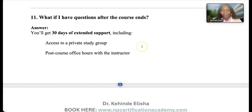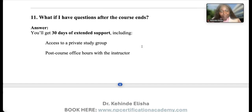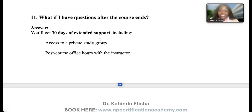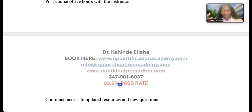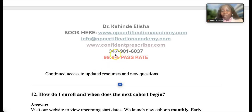What if I have questions after the course ends? That's not a problem. I'm available for you until you test, whether your course has ended or you're already out of the class. After you pass, we put you into our expert group to continue guiding you throughout your career. You'll receive 30 days of extended support, including access to a private study group, post-course office hours, and continued email and phone access. Our phone number is 347-901-6037.